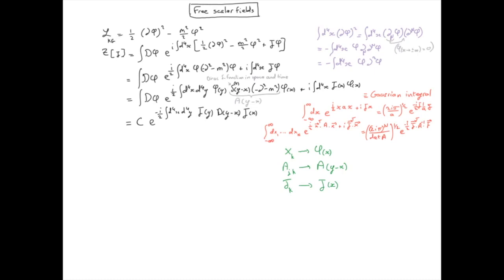Where D is the inverse of the operator A. C is just a constant which does not depend on the source. And as I'm essentially interested in how the field reacts to the action of the source, this is not a very important object in itself. And in fact, this is the amplitude z when j is equal to zero.